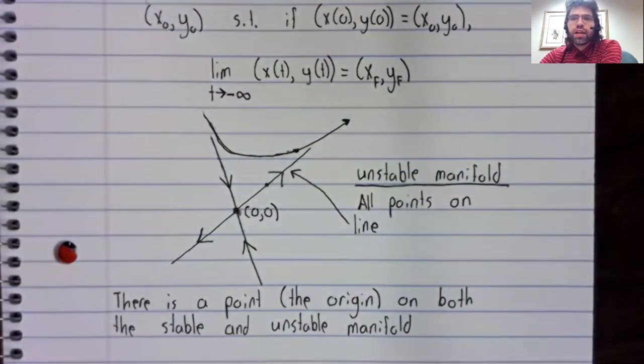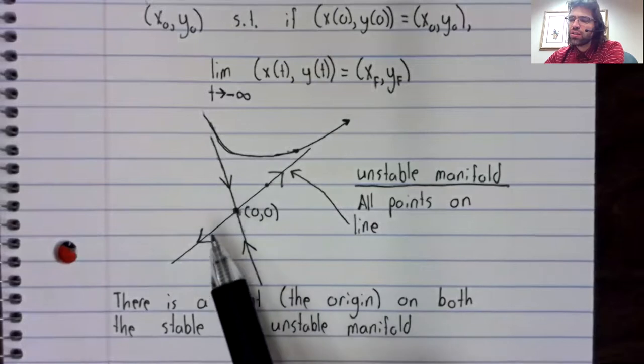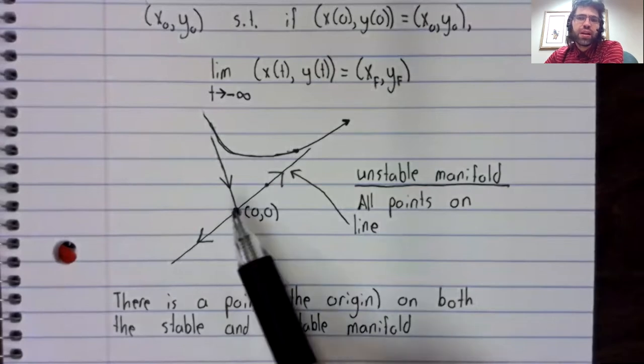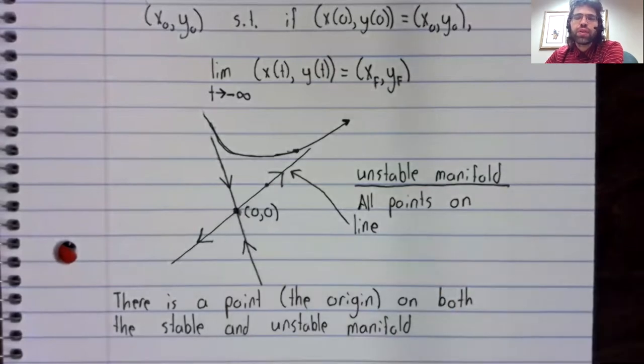When we're looking at linear systems, the stable manifold and the unstable manifold are only ever going to intersect at a single point, as we see here. If they intersect, they will intersect at that point.